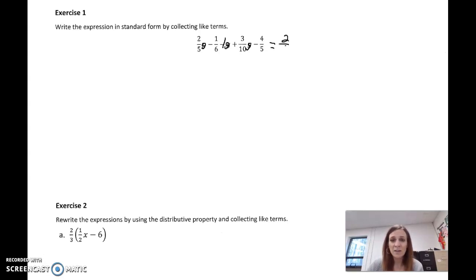Let's take two-fifths times G. Instead of saying minus one-sixth, I'm going to say plus a negative one-sixth. I'm going to try not to be quite so sloppy. Then I'm going to say, instead of saying minus 1 G, I'm going to say plus a negative 1 G, plus three-tenths G. And instead of saying minus four-fifths, I'm going to say plus a negative four-fifths, and no G on that.